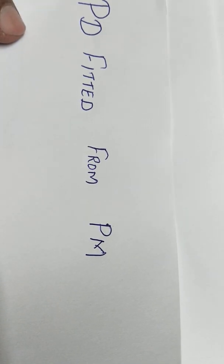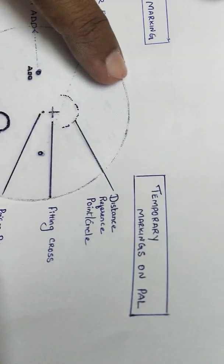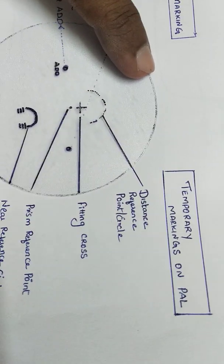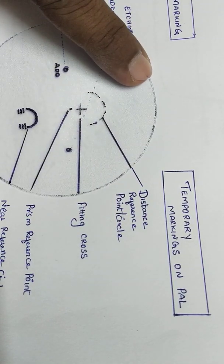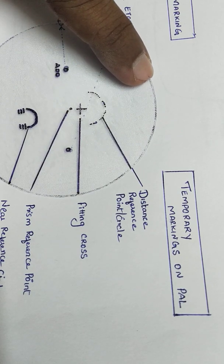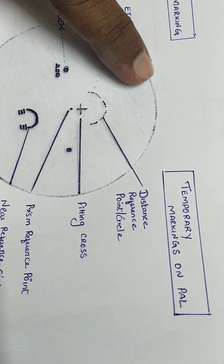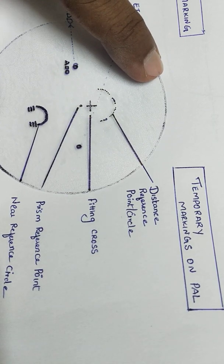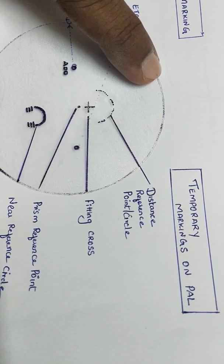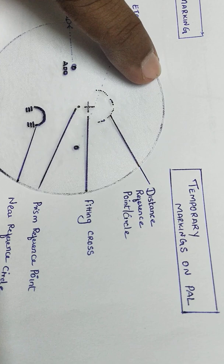As you can see here, on a progressive lens we have a temporal marking. You have distance reference point, fitting cross, prism reference point, near reference circle. We know that this is a temporary marking.